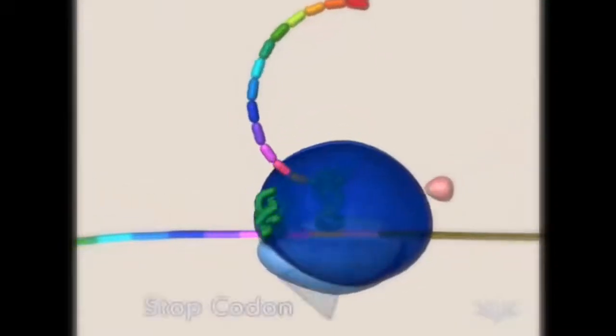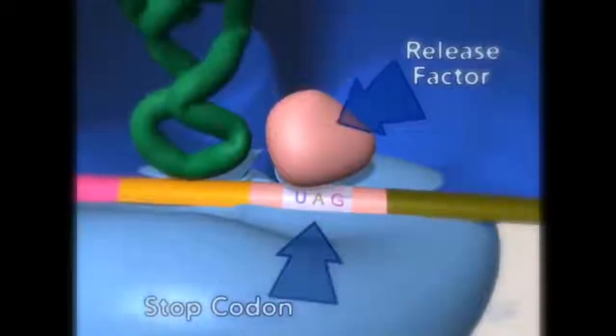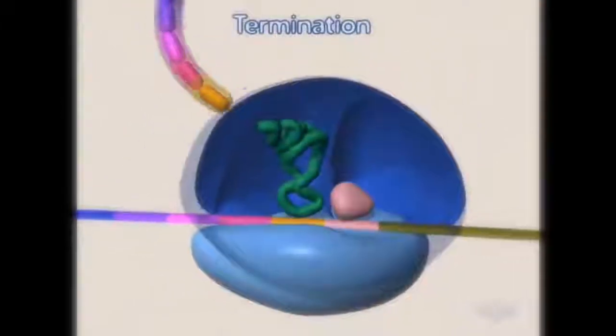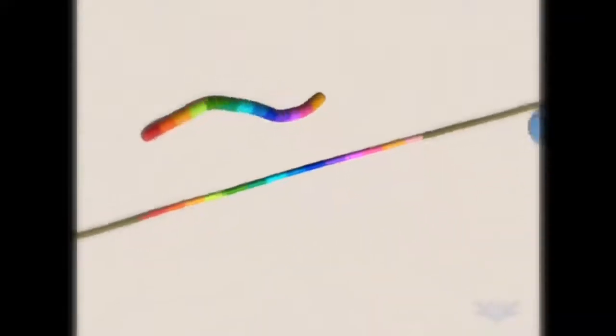When a stop codon is encountered in the A-site, a release factor enters the A-site, and translation is terminated. When termination is reached, the ribosome dissociates, and the newly formed protein is released.